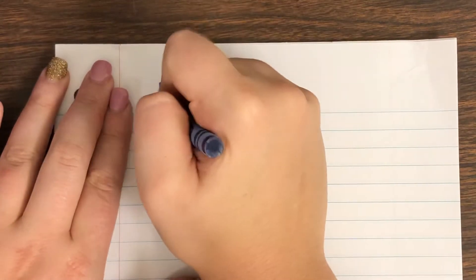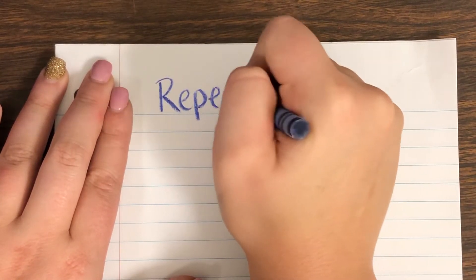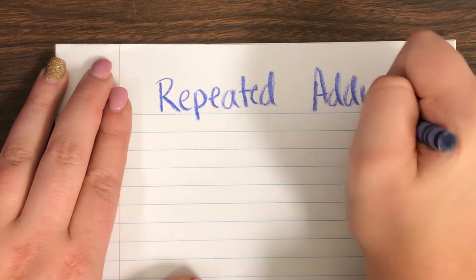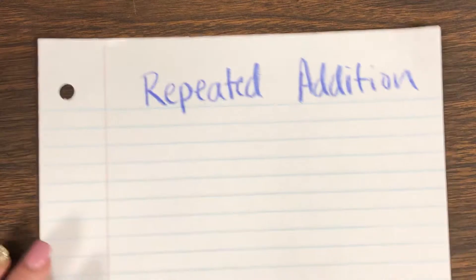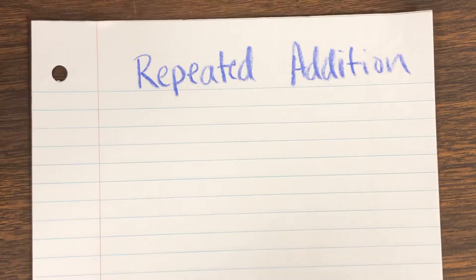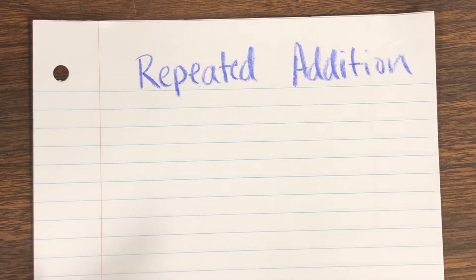Hi guys, this video is to show you what repeated addition looks like when you're trying to find the repeated addition for a multiplication sentence. Repeated addition is what multiplication is — multiplication is repeating the same number a bunch of times and adding them together to get the product. It's a quicker way to add, that's what multiplication is.